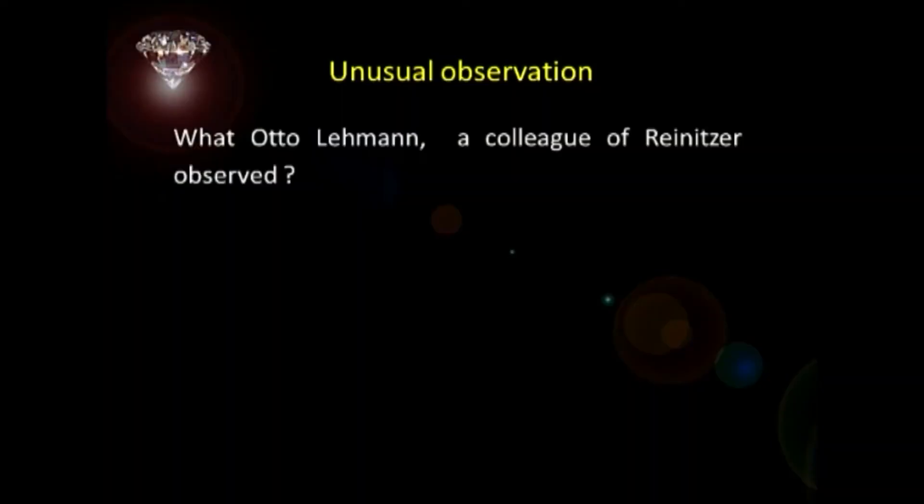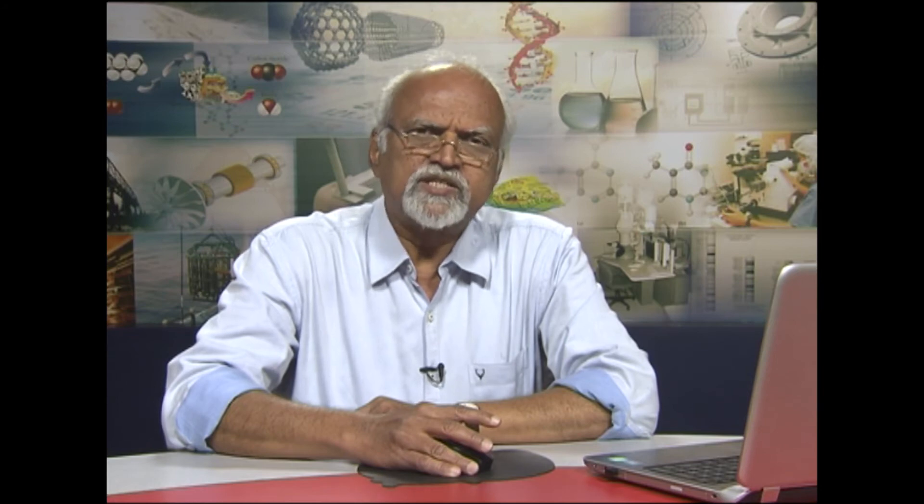This observation was discussed with Otto Lehmann by Reinitzer. Otto Lehmann is a physicist and a colleague of Reinitzer. Lehmann was interested in studying optical properties of solids. Solids show birefringence — a characteristic property — which is nothing but the directional dependence of refractive indices. He tried to find out whether this milky liquid is really a liquid, and to make that experiment, he sandwiched this milky liquid between two cross polarizers. And to his surprise, it showed birefringence like any other solid.